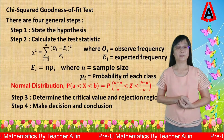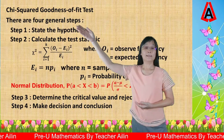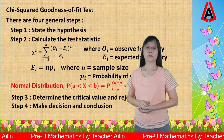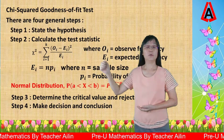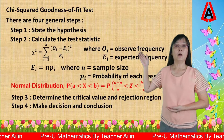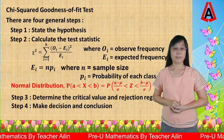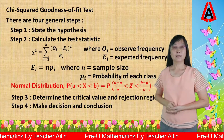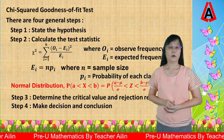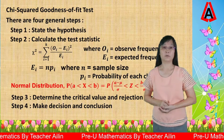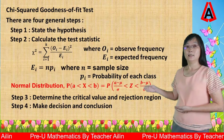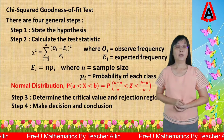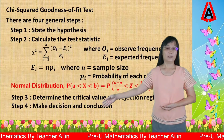When carrying out a chi-squared goodness of fit test, generally there are four steps. Step one: state the hypothesis. Step two: calculate the test statistic, where chi-squared equals the sum of (O minus E) squared divided by E, where O is the observed frequency and E is the expected frequency. The expected frequency is calculated using the formula N times P, where N is the sample size and P is the probability of each class. Since we are testing normal distribution, we use the standard normal distribution table to find the probability. Step three: determine the critical value and rejection region. Step four: make decision and conclusion.